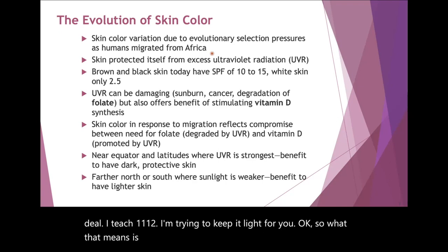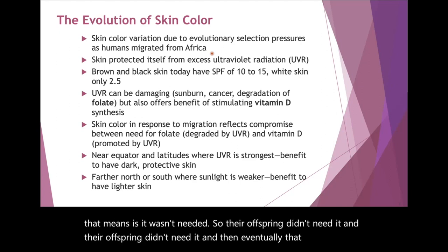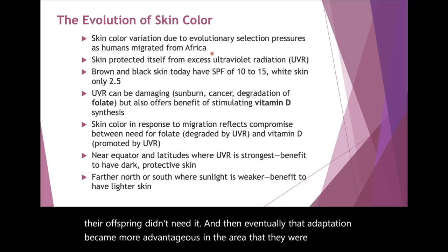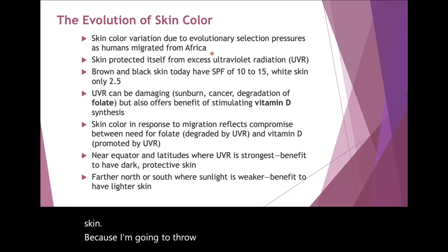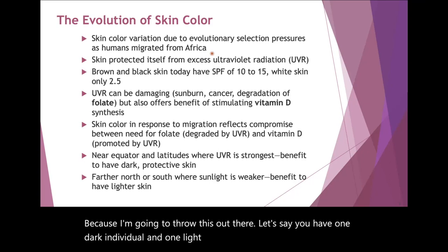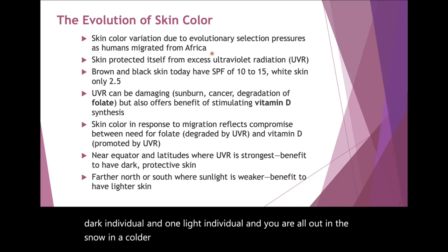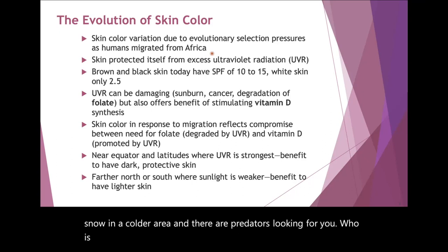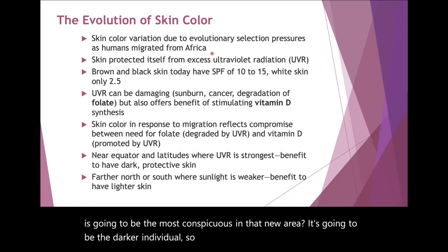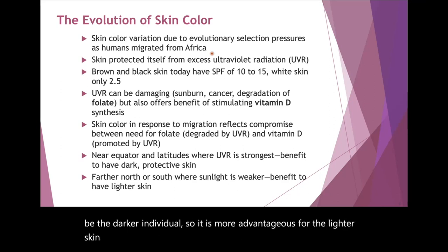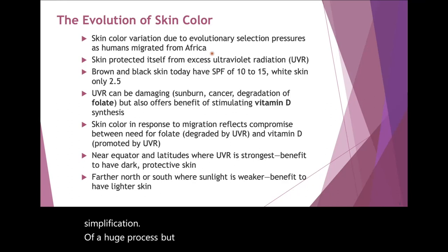What that means is it wasn't needed, so their offspring didn't need it, and eventually that adaptation became more advantageous in the area that they were in. For example, if you have one dark individual and one light individual out in the snow in a colder area with predators looking for you, the darker individual is going to be the most conspicuous in that new area. So it is more advantageous for lighter skin to be in that lighter-skinned area.